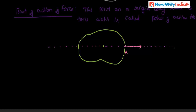This line is called the line of action of force — it is an imaginary line. An imaginary line passing through the point of action of force and drawn in the same direction in which the force acts is called the line of action of force. Here the line XY is called the line of action of force.